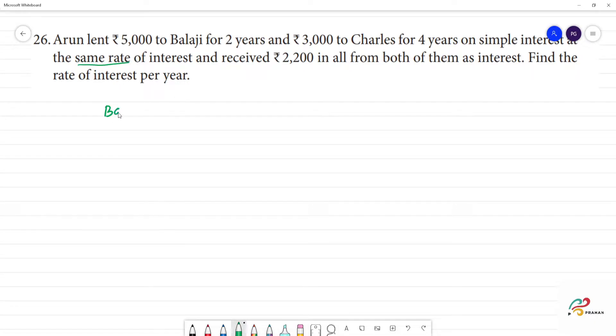First Balaji, then Charles. So Balaji's principal amount is equal to rupees 5,000. Number of years is equal to 2 years. R we don't know. Then for Charles, the principal amount is equal to 3,000 rupees. Number of years is equal to 4. R we don't know.